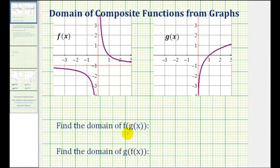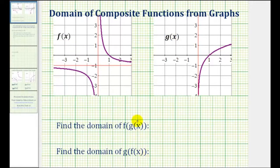We want to find the domain of the composite functions f of g of x and g of f of x from the graph of f of x and the graph of g of x. So because we're not given the equations for f of x and g of x, determining the domain of our two composite functions can be more challenging. Let's start by determining the domain and range of f of x and g of x.